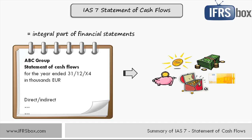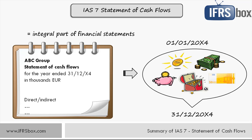The Statement of Cash Flows is prepared always for a certain period — for example, for the year from 1st January to 31st December 20X4. Such a statement should show you how the company generated cash and where the cash was spent over that period, showing the movement of cash and cash equivalents. As every other component of financial statements, it must contain the same identification marks.